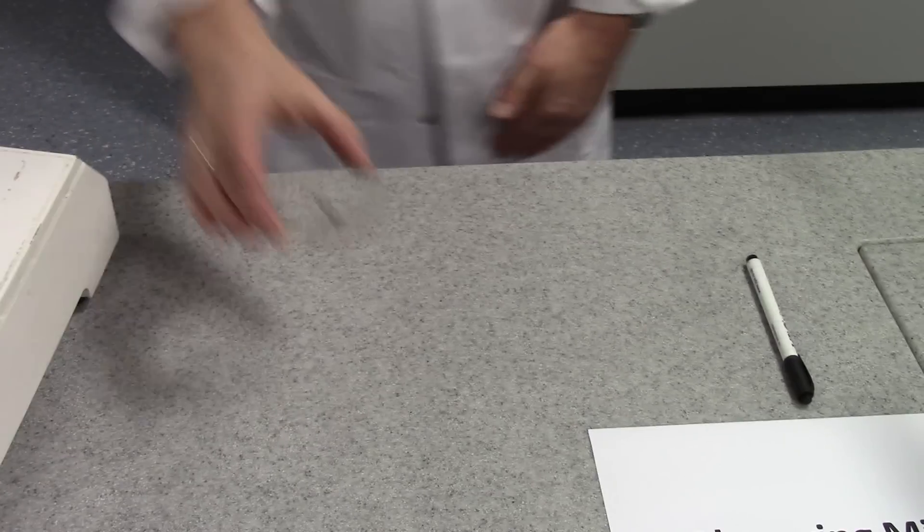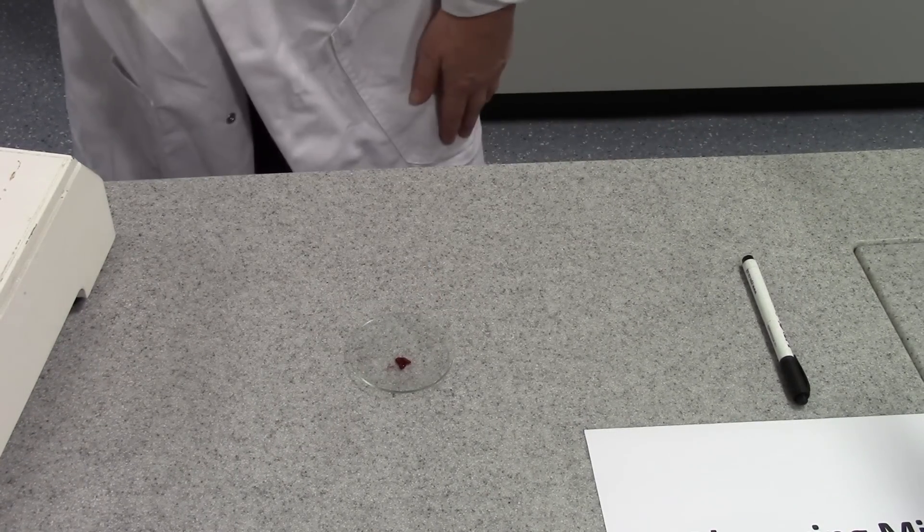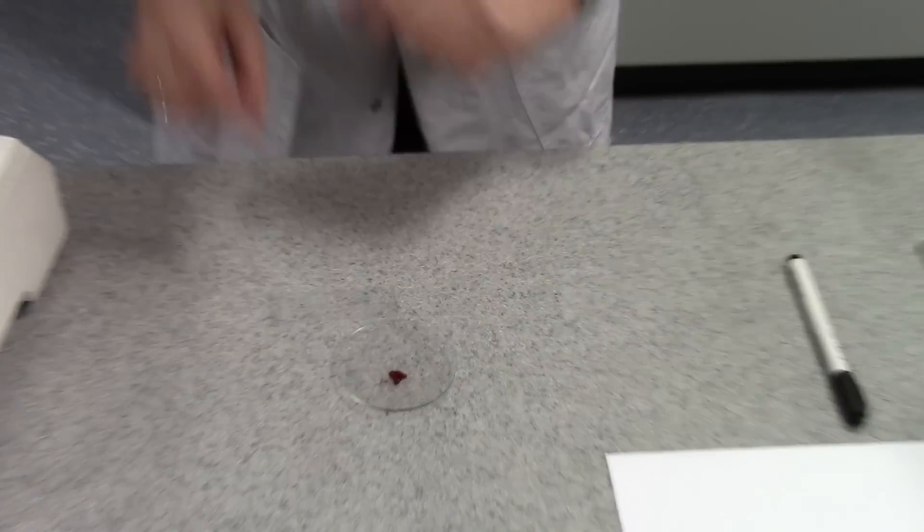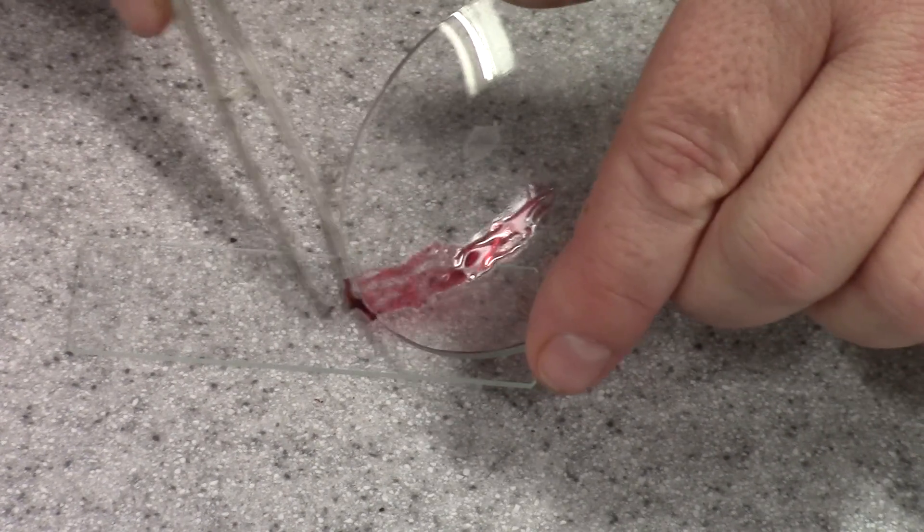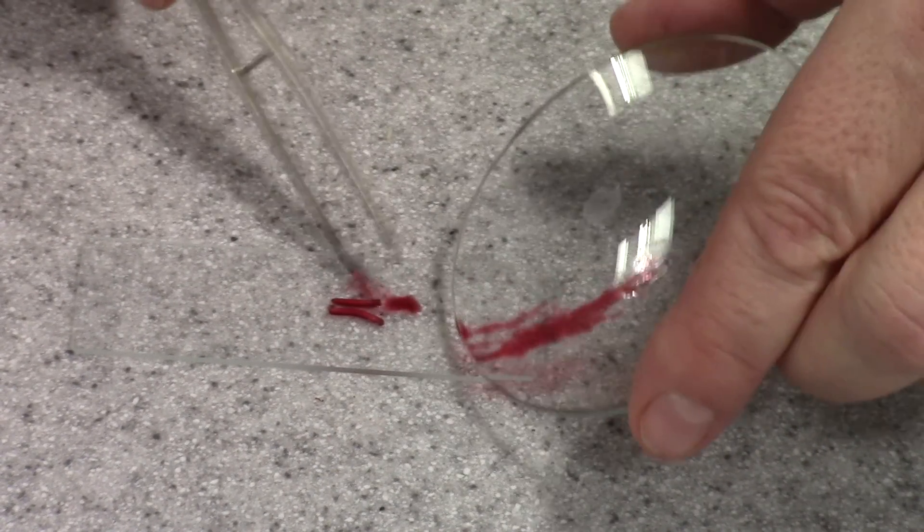Our next step then, we have to transfer the root tips to a clean microscope slide. And then we're going to add one drop of the original acetic eosin stain. And then we're going to cover it with a cover slip.